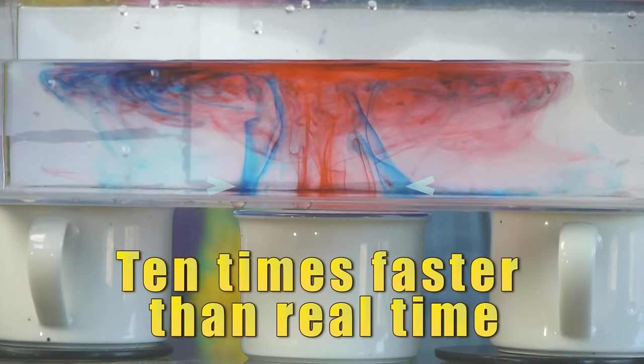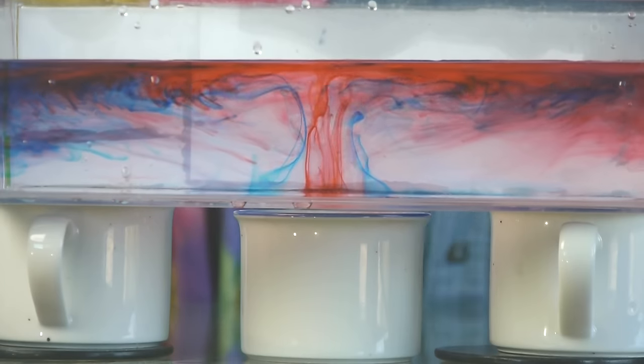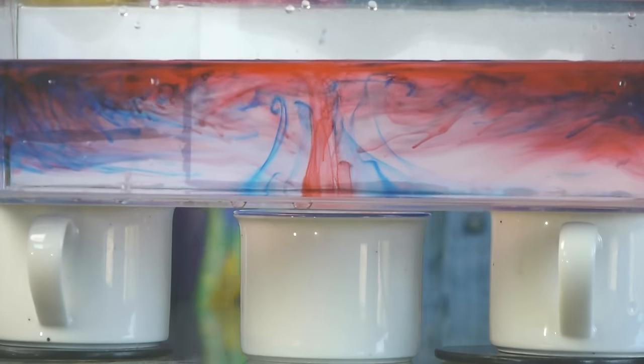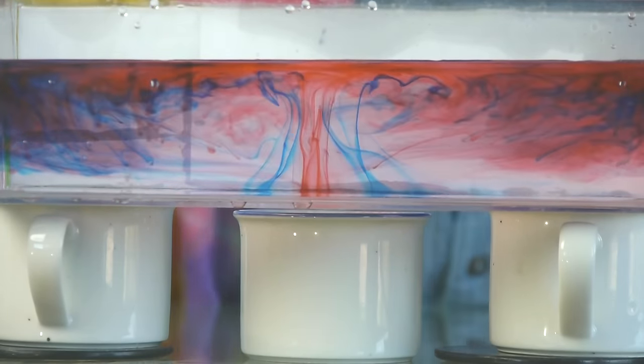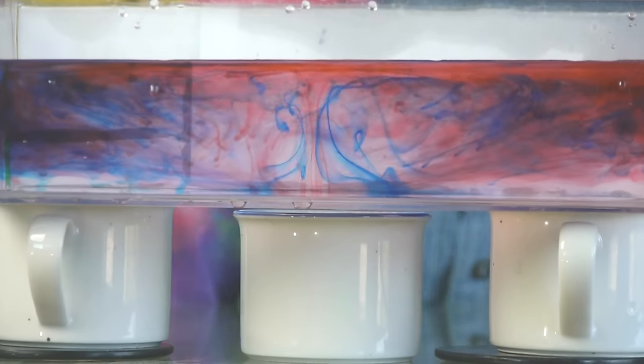Here's the thing I want you to remember. When water moves from one place, it doesn't leave a void behind. Water from somewhere else has to move in to take its place. That's why you can see the blue food coloring coming in from the sides.